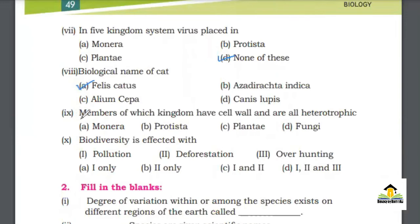MCQ number 9: Members of which Kingdom have cell wall and are all heterotrophic? A. Monera, B. Protista, C. Plantae, D. Fungi. The right answer for this MCQ is D. Fungi.